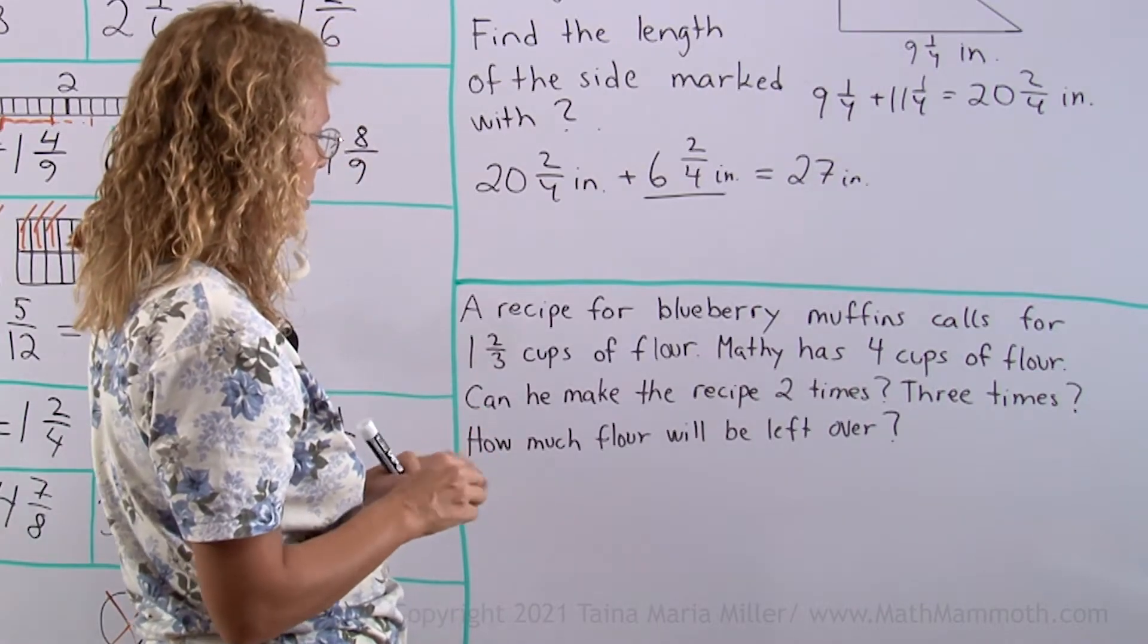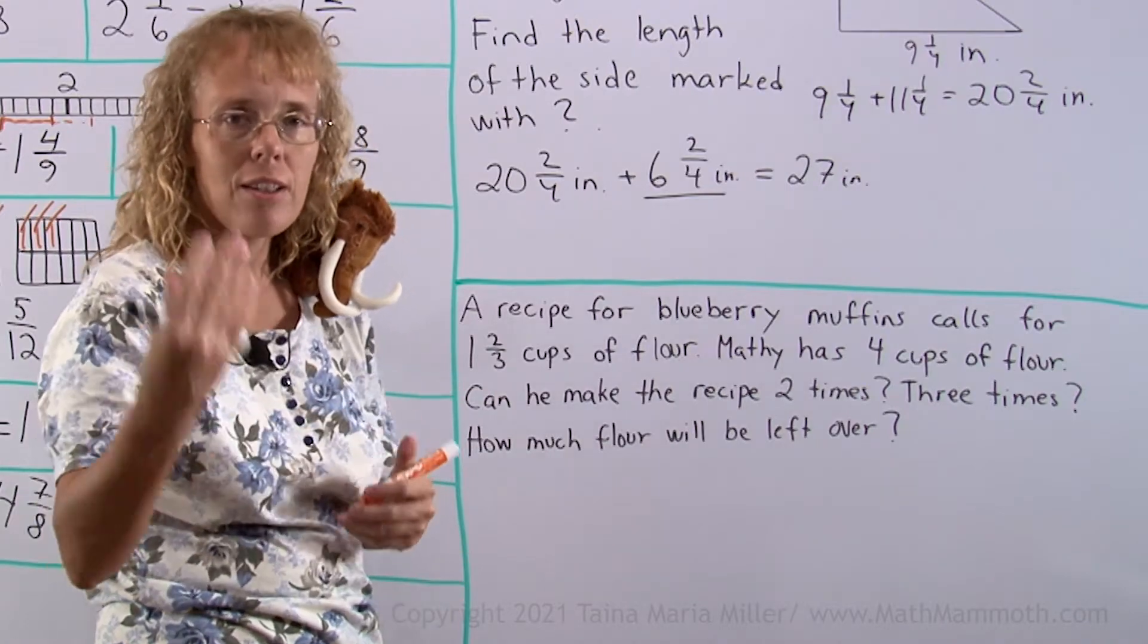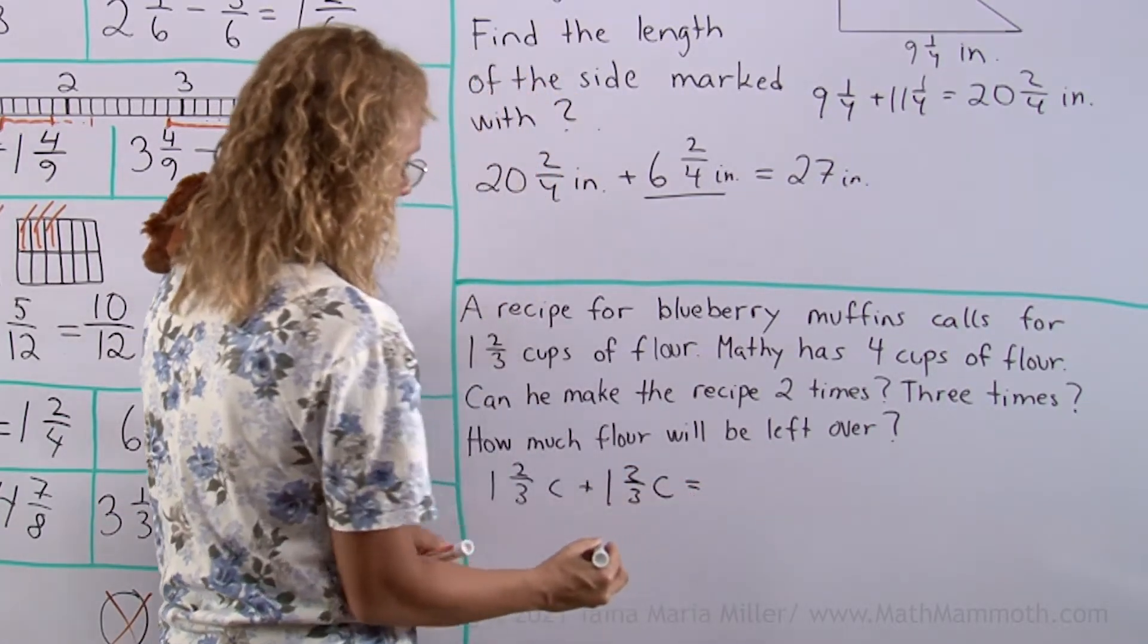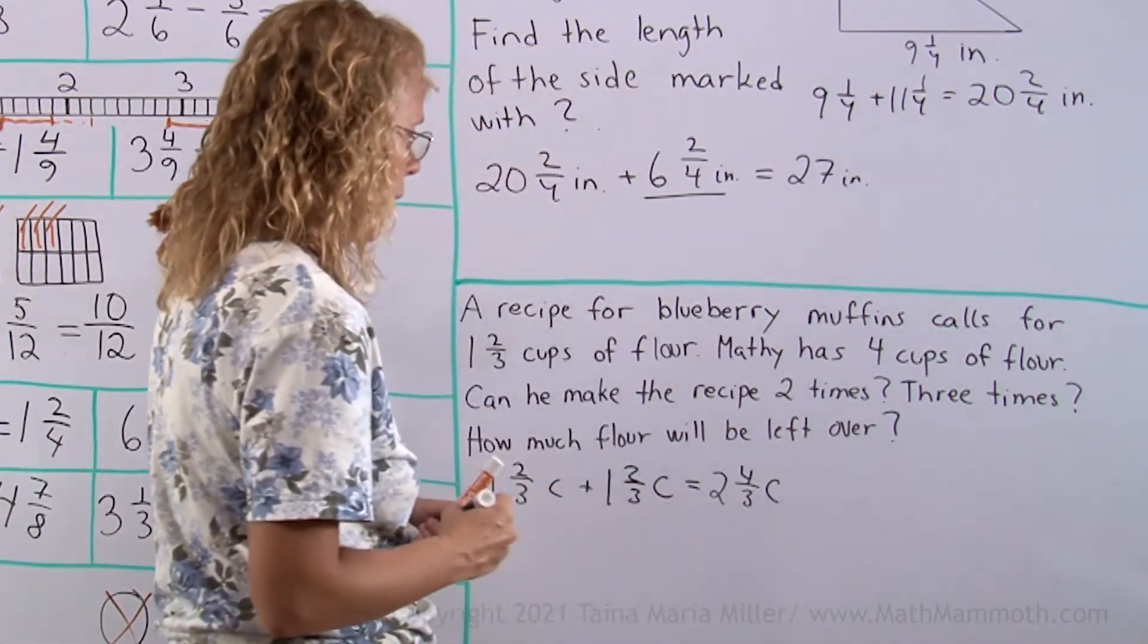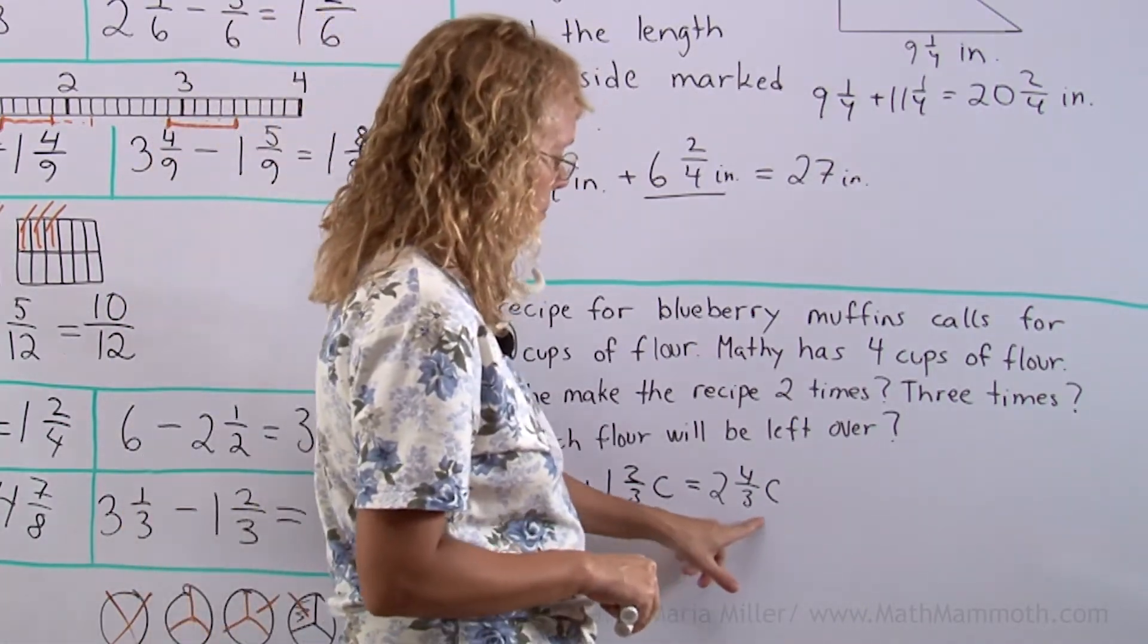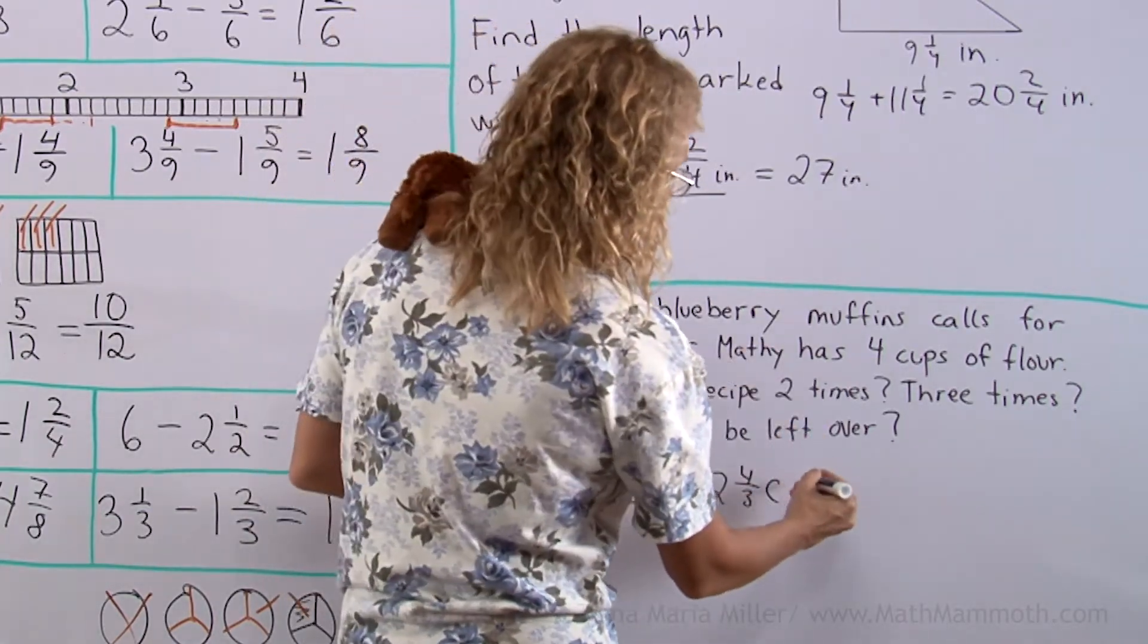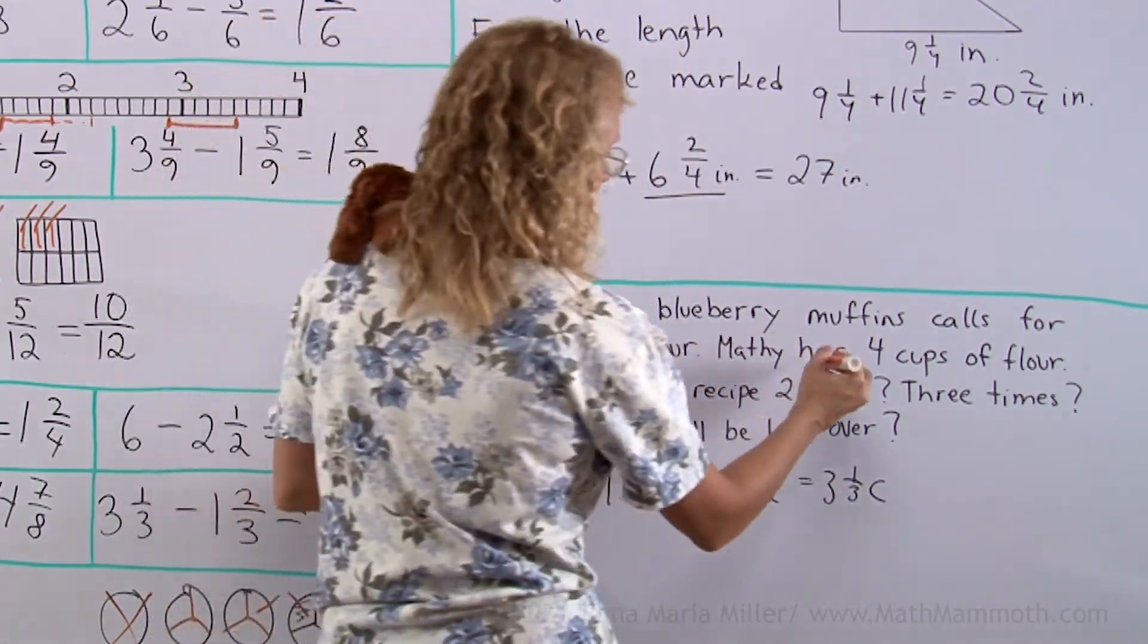Okay, can he make it two times? Let me add if I have 1 and 2/3 cups of flour and then another 1 and 2/3 cups. Okay, there's 2 and 4/3 cups. Okay, I think he can make it two times. You see? Now this is of course more than a cup, 4/3. 3/3 would make a cup, so this is actually, there's a cup and a third here. So we could write it as 3 cups and 1/3, right? So yes, he can make it two times. I'll put here as yes.